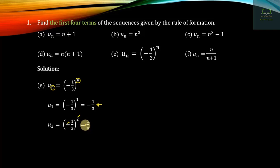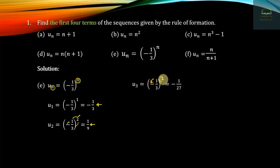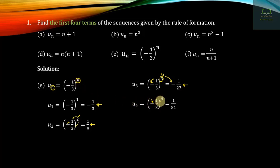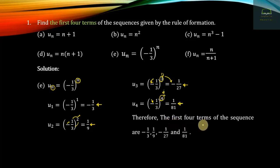We will compute u_n = 1 minus 3 to the power n. For n=1: 1 minus 3 equals minus 2. For n=2: 1 minus 9 equals minus 8. For n=3: 1 minus 27 equals minus 26. For n=4: 1 minus 81 equals minus 80. The first four terms of the sequence are minus 2, minus 8, minus 26, and minus 80.